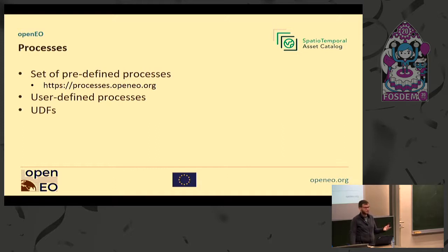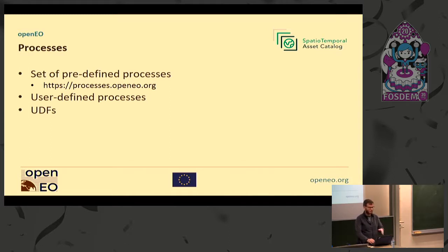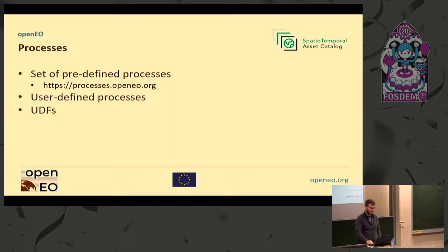And then there are UDFs again, which is basically the thing I talked about before, where you can write your R and Python scripts and send them to the server as part of other processes. So basically you can say: I use a predefined process to load data, then this data gets passed to the UDF process, and then you can further compute it with other predefined processes to save, for example, the data — and then you are ready to go and download the data.